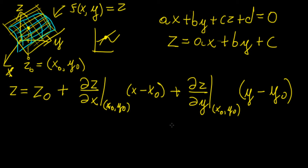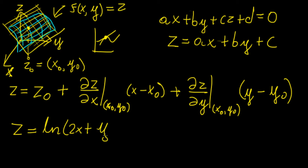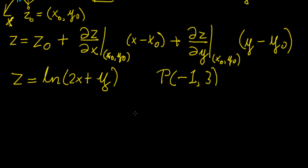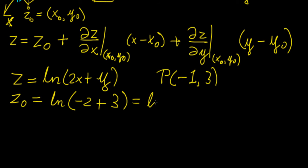So let's apply this to a simple example. Let's have the function z equals to the natural log of (2x plus y), and let's say we want to find the equation of the tangent plane at the point (-1, 3). The first thing we're going to do is evaluate z0, which is just going to be this point substituted in: that's natural log of (-2 + 3), which is ln(1), and we know this is equal to 0.